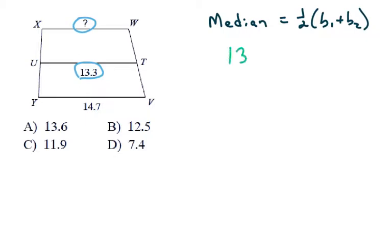So I know that the median is 13.3, and I have 1 half. So base 1, I'm going to say is the question mark, which is X, and then base 2, I'll use as 14.7.